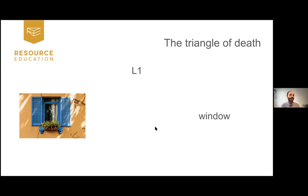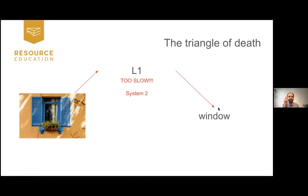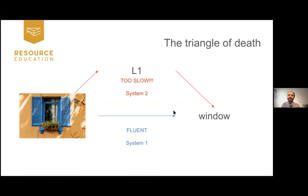I like to remember this as the 'triangle of death.' However students learn new information — even with translation — it goes into System Two. They see 'window,' remember the L1 word, translate it. That's fine, that's System Two. I'm not against translating when learning new information. What I'm interested in is the right system of practice to move slow System Two into a reflex in System One — to make the blue path stronger than the red path, so students build reflexes and can speak fluently.